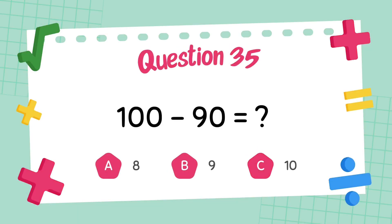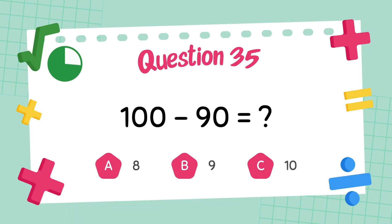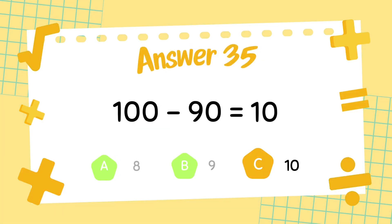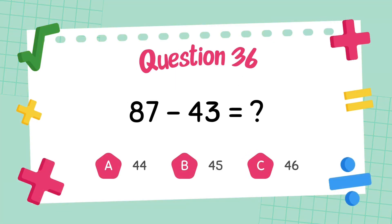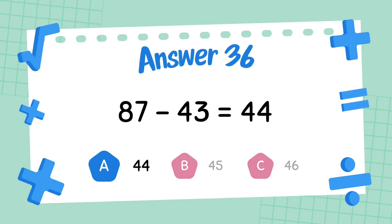What is 100 minus 90? The answer is 10. What is 87 minus 43? The answer is 44.